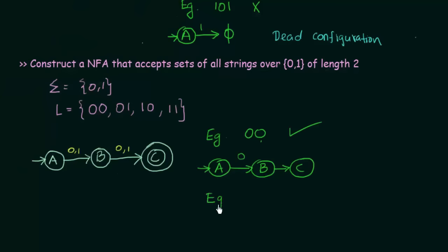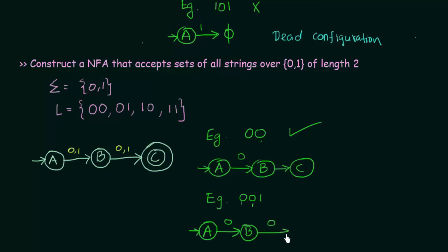Now let's test string 001, which should not be accepted since its length is 3 and the NFA only accepts strings of length 2. Starting at A, on input 0 it goes to B, then on input 0 again B goes to C. But C on getting input 1 has no place to go — we represent this with Phi. So at the end I am at Phi and this string is not accepted. Those were examples of how to design two simple NFAs. Thank you for watching and see you in the next lecture.